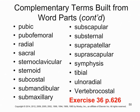Here is the remainder of the complementary terms built from word parts. Nothing on this list is new — it's just combining parts in new ways. Remember all the suffixes meaning pertaining to: -al, -ic, -ar, and others. If you use one pertaining-to suffix instead of another when building a word, it's considered equally correct — for example, pubal or pubic would both be acceptable.